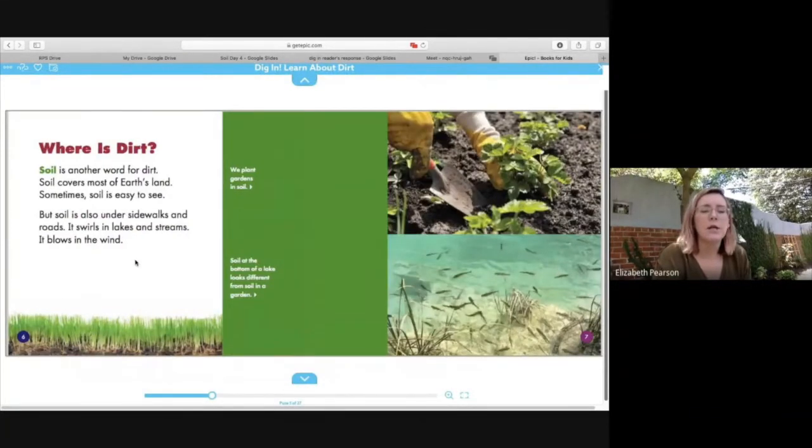All right, next page. This chapter is called where is dirt? That was one of the questions that we came up with before we read the book. So let's see if we can find the answer to that. Soil is another word for dirt. Soil covers most of earth's land. Sometimes soil is easy to see. But soil is also under sidewalks and roads. It swirls in lakes and streams. It blows in the wind. So we can see dirt all around us most of the time. But sometimes it's there and it's just hiding under things like streets and lakes. Even though we can't see it, it's going to be there still. The word soil is boldface, which means it's an important vocabulary word. And it's going to be located in the glossary in the back of the book. So it'll tell you what that word means if you look in the glossary. So let's look in the glossary and see if we can find the word soil. And then we can learn a little bit more about it. We can learn the definition.